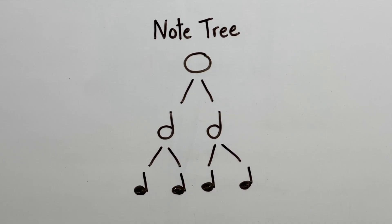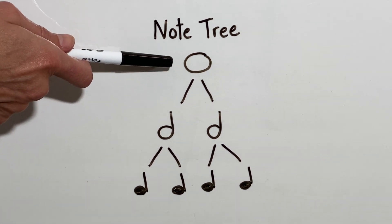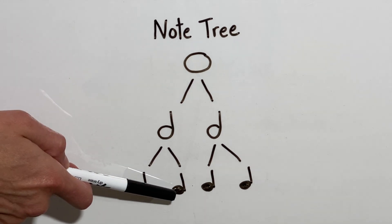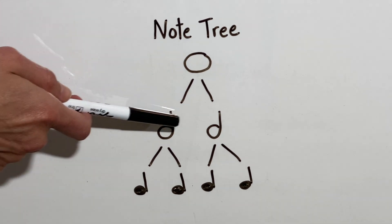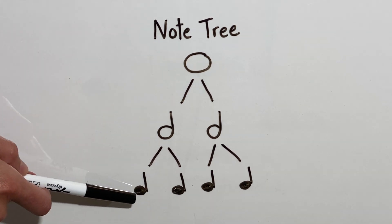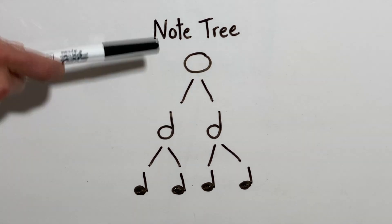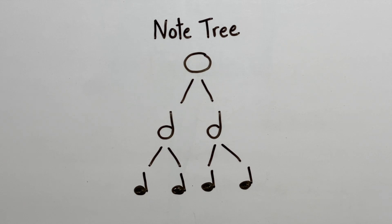Musicians often utilize something called a note tree so we can see the relationship between notes. This note tree is using three of the notes I just introduced to you. The top note is our whole note, which gets four counts. Then we have two half notes, which each get two counts. And then four quarter notes, all getting one count. What this shows us is that our whole note, which gets four counts, is equal to two half notes which each get two counts. Each half note is equal to two quarter notes — one plus one equals two, and two plus two equals four. It also shows us that four quarter notes are going to be equal to one whole note.